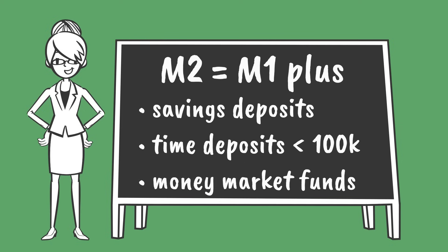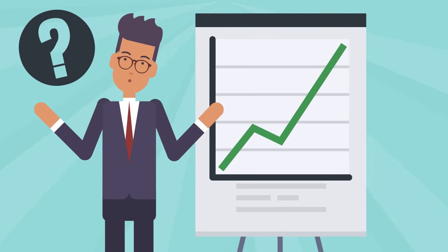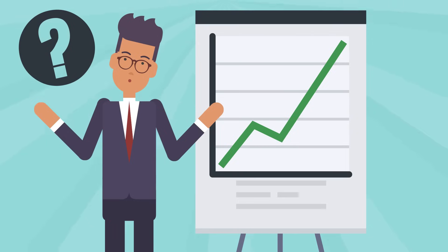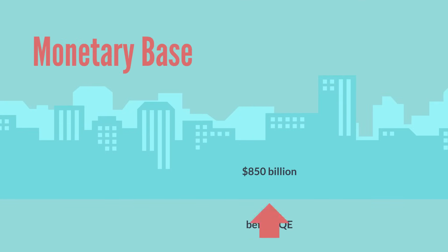So let's assume you're wondering why prices haven't gone up a ton despite the Federal Reserve pumping money into the system through quantitative easing. Well, money supply data can help us. There were roughly $850 billion in the monetary base in August of 2008, so before quantitative easing started.